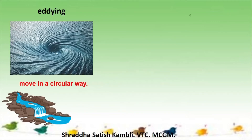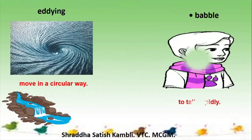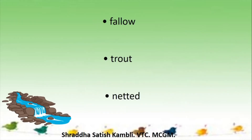Babble means to talk very rapidly. Remember, these are all examples of personification — you are personifying a river or brook because water cannot talk. There are some more meanings here — fallow, trout, and netted — which I have explained during the poem. Even then, open your dictionary and find out the meanings, and try to figure out how a fallow would look. I have already shown you the picture of a trout. So this is your assignment — pick up your dictionary and find out the meanings.